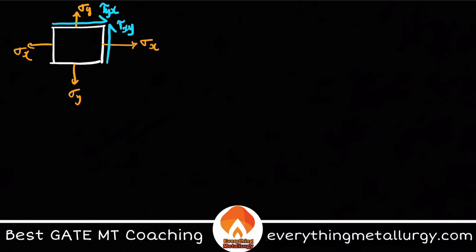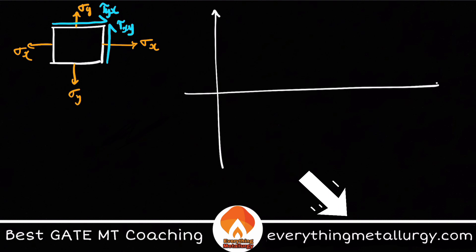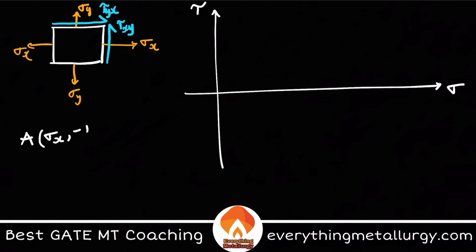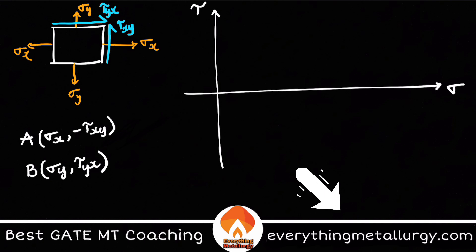For that reason we use different steps to construct the Mohr's Circle in the σ–τ space. Here the horizontal axis is σ (normal stress) and the vertical axis is τ (shear stress). The first step is to plot the points: point A has coordinates (σx, −τxy) and point B has coordinates (σy, τxy). We take these stress values applied on the body and represent them in this σ–τ graph.